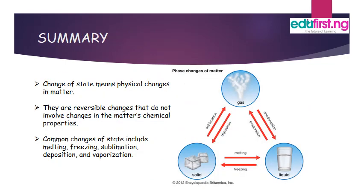Change of state means physical changes in matter. They are reversible changes that do not involve changes in the matter's chemical properties. Common changes of state include melting, freezing, sublimation, deposition, and vaporization. The diagram to the right illustrates the processes of changing from one state to another and vice versa.